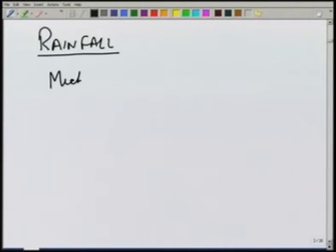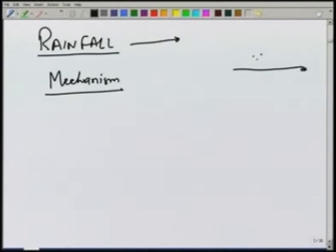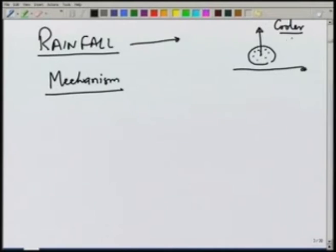Let us first look at what is the mechanism of rainfall. What we require is the presence of water vapour, and then somehow it should condense and fall to the ground. Suppose this is the ground level and there is water vapour present in the atmosphere. This has to cool down in order to precipitate. If we have some air mass which contains water vapour and it is lifted to a higher level, then as it goes to a cooler level, there will be condensation and this will fall as precipitation.